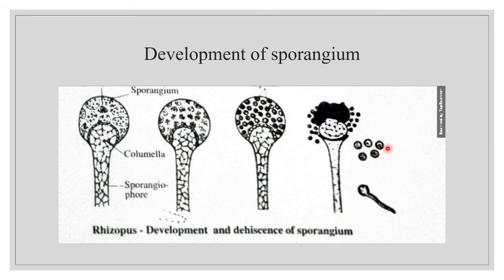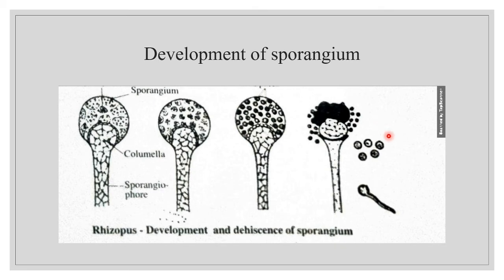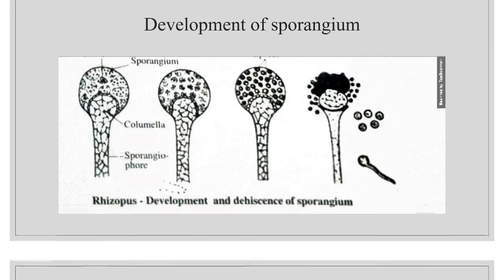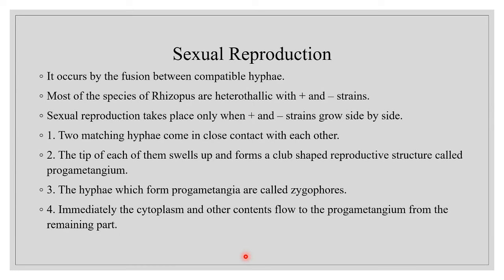Because of the presence of black spores, the fungus is called black mold. When mature, these spores are liberated by the bursting of the sporangial walls and get dispersed far and wide by wind and air currents. Upon reaching a suitable substratum, each spore germinates and grows into a new Rhizopus mycelium under favorable conditions of temperature, moisture, and humidity.